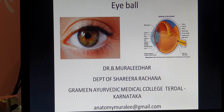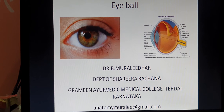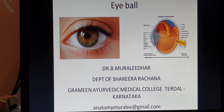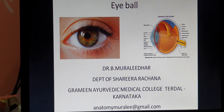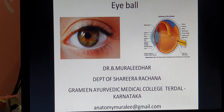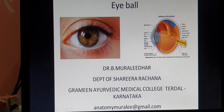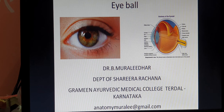Today we are going to discuss about the eyeball in general aspects. I am Dr. Moolay Darbadi from the Department of Shari Rechana, Graminayarthic Medical College, Terda, Karnataka. When you are seeing the eye from the front view, there is a dark black circular structure called the cornea, the remaining white part is called the sclera, and the central black hole is called the pupil.